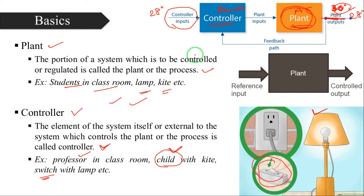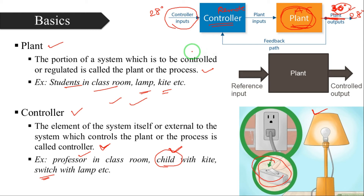This is an open loop system — one-way control. A closed loop control system has control with feedback. When we create a feedback path, that is called a closed loop control system.